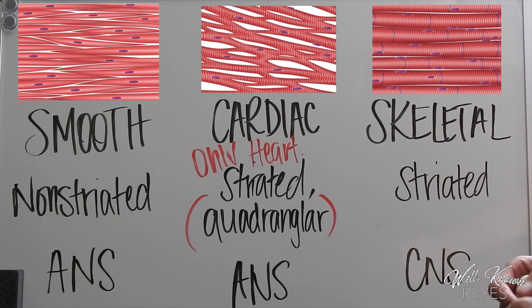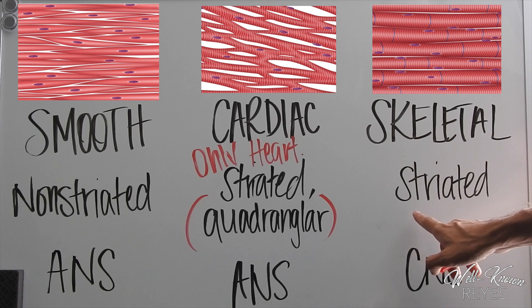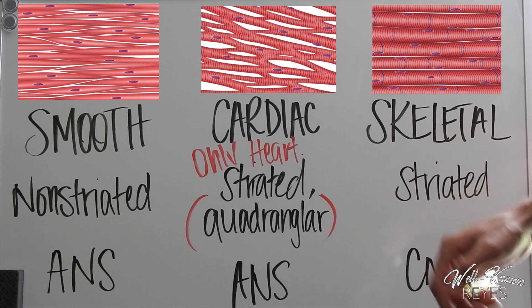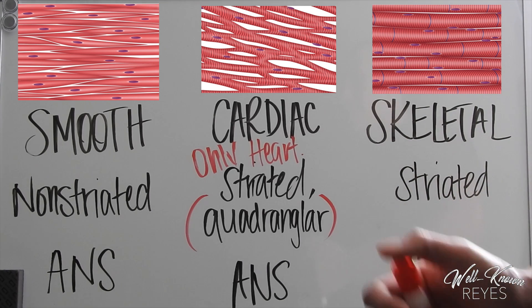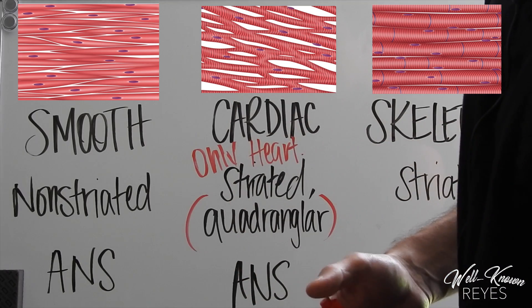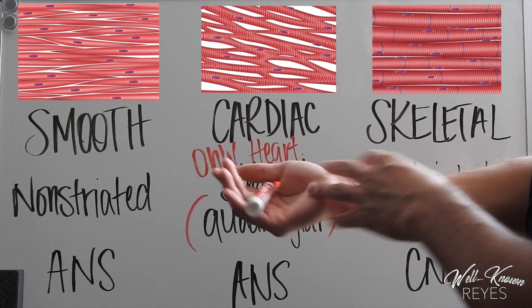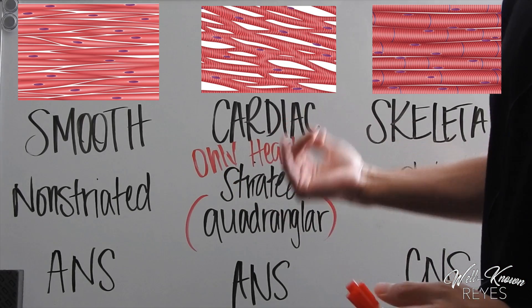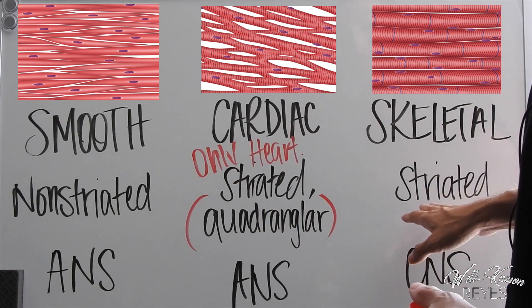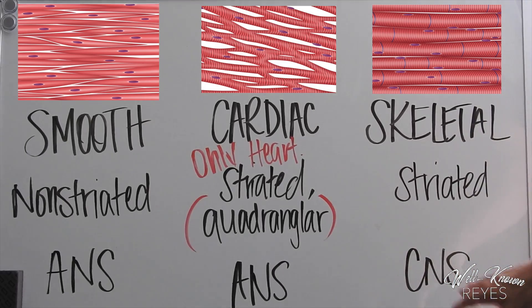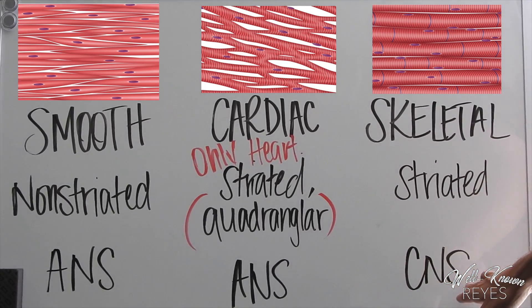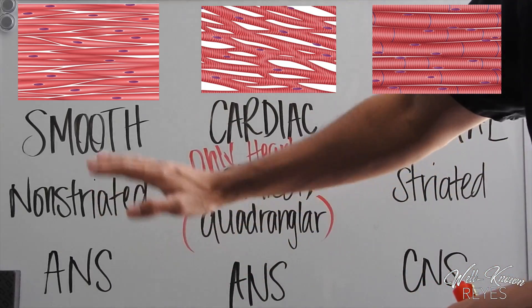Lastly, we have skeletal muscle tissue, which is also striated underneath the microscope. This is found in the fleshy areas of our body—it's what attaches to our skeletal system and makes up most of our body.